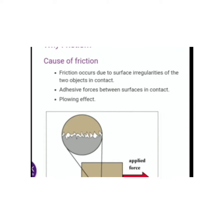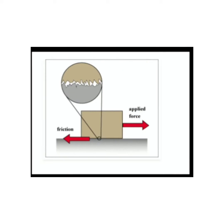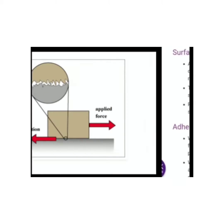Why Friction? Because of friction, friction occurs due to the surface irregularities of the two objects in contact. It is a force between the surfaces in contact. This is the diagram, you can see it.